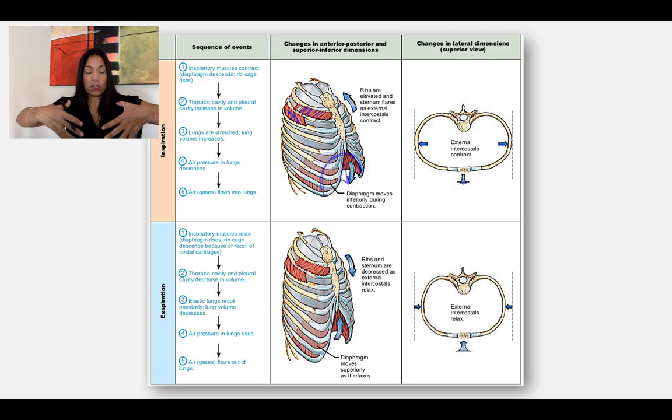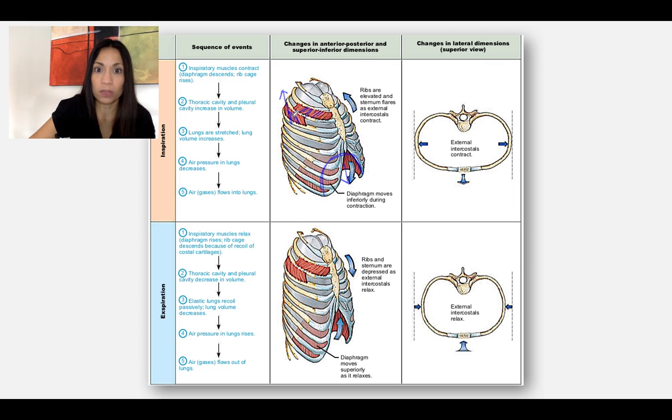The external intercostal muscles run in this direction, as you can see in here. So when they contract, they can elevate the ribs. And when they're elevating the ribs, we're increasing the diameter of the thoracic cage. So these are the two main inspiratory muscles. The prime mover is the diaphragm, but then we also have the external intercostals. This is a normal inspiration.